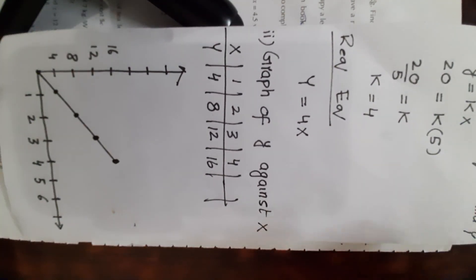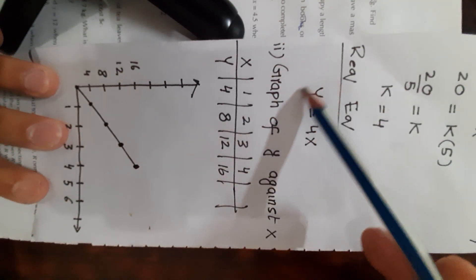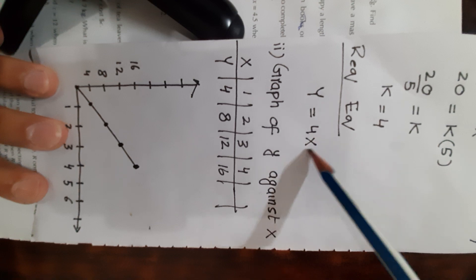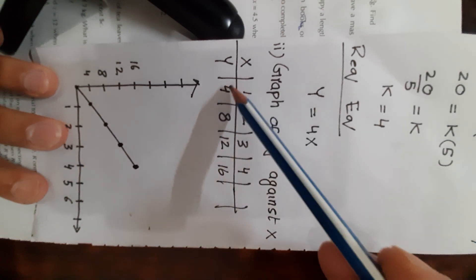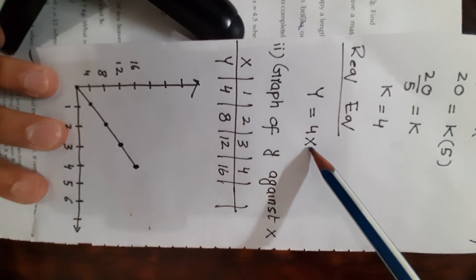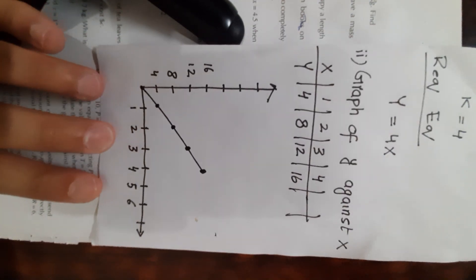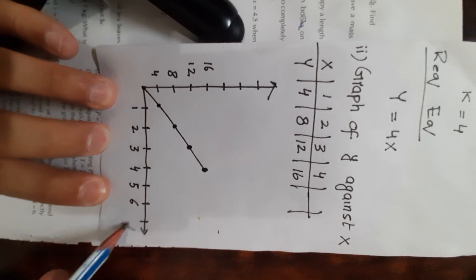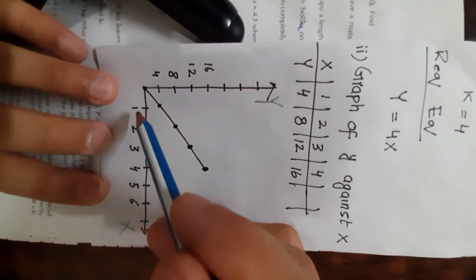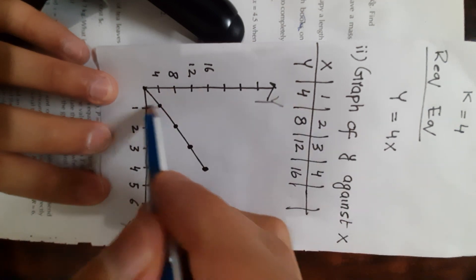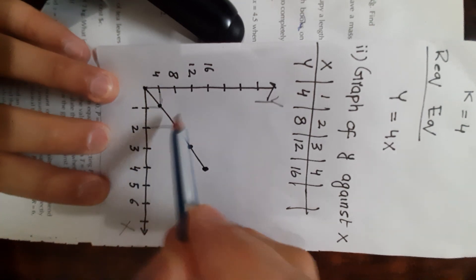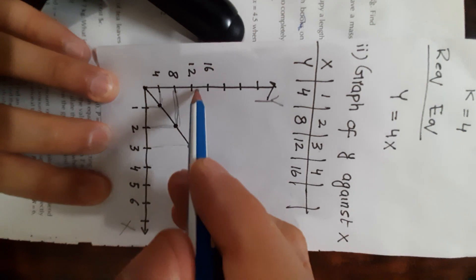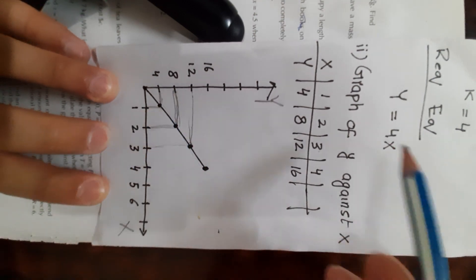Part two asks to draw a graph of y against x. Use the relation y equals 4x and take a few values: when x is 1, y is 4; when x is 2, y is 8; when x is 3, y is 12. Plot these on graph paper with x on the horizontal axis and y on the vertical axis. Joining them gives a straight line graph for y equals 4x.